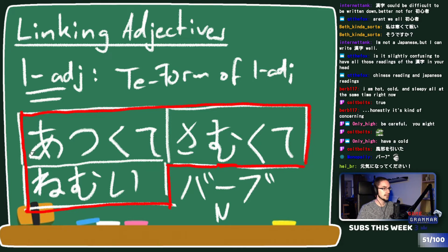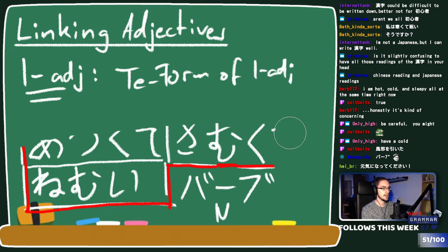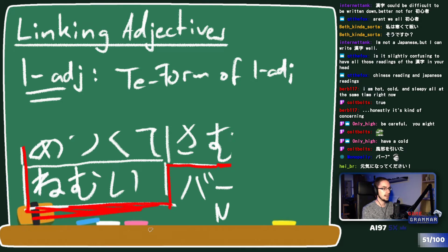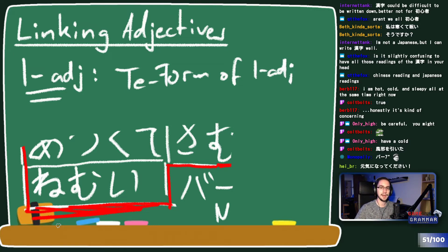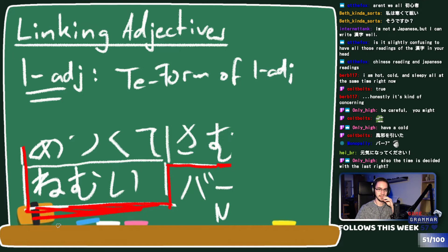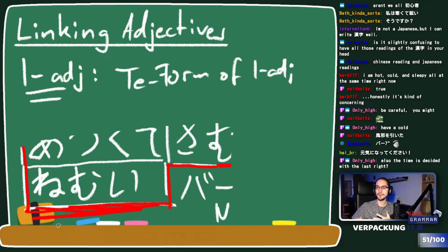Remember - the last adjective in the chain doesn't get changed into te-form. The last one stays because it acts as the thing that turns all of it back into an i-adjective, allowing us to put a noun or other element after it. Tense is also decided with the last adjective. If you wanted to put this all into past tense, that would express 'it was hot and cold and I was sleepy.'